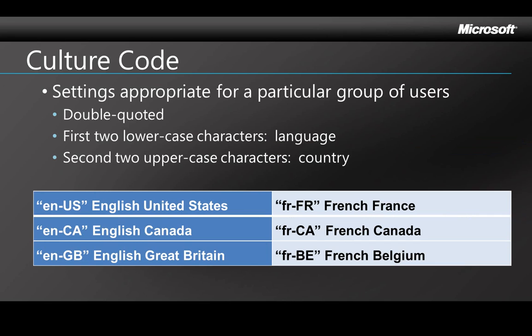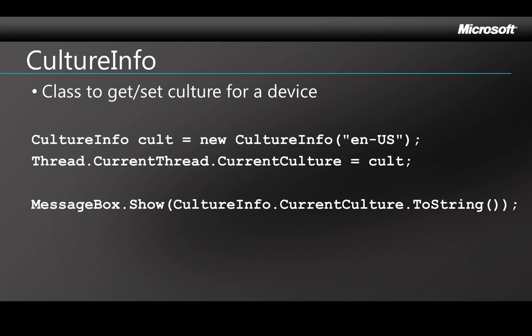A culture in the coding sense means a group of settings that are appropriate for a particular user group, based on what language they speak and what country they're located in. A culture is represented by five characters. The first two characters of a culture code are the language, then there's a dash, and the second part is the country. CultureInfo is a class that you use to work with cultures. It can get or set the current culture for a particular device, and the user can also see or set the current culture in the hardware.